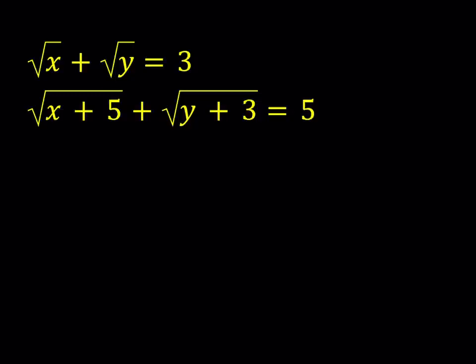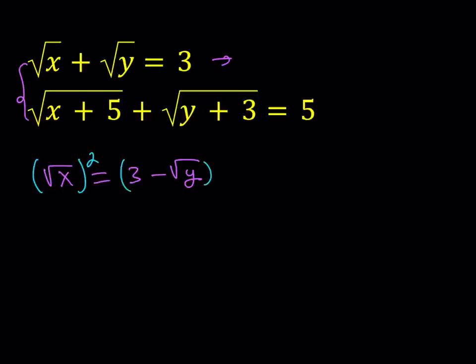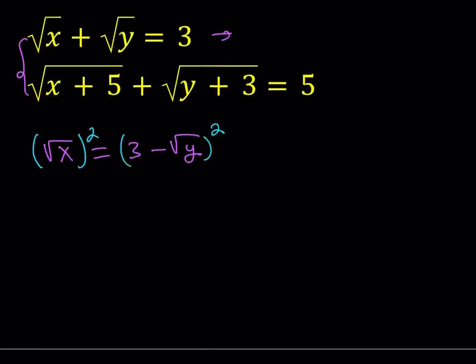From the first equation, I'd like to isolate the square root of x. So I'm going to write it as 3 minus the square root of y. And then I would like to square both sides. My goal here is basically to get rid of some of the radicals at least. So this is going to give me x equals 9 minus 6 times the square root of y plus y.